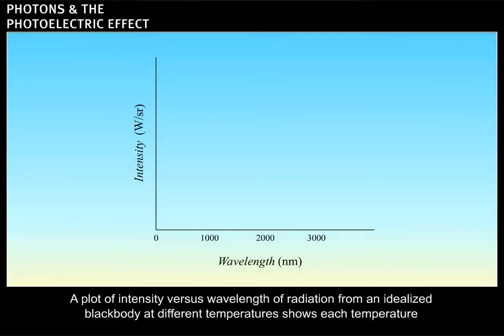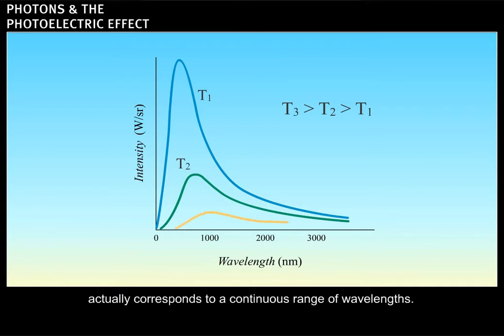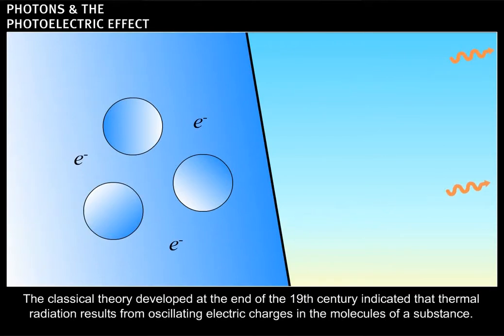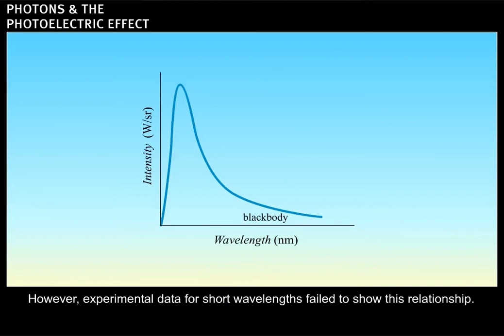A plot of intensity versus wavelength of radiation from an idealized black body at different temperatures shows each temperature actually corresponds to a continuous range of wavelengths. The classical theory developed at the end of the 19th century indicated that thermal radiation results from oscillating electric charges in the molecules of a substance. The theory implied that the intensity of the black body radiation should be inversely proportional to the fourth power of the wavelength. However, experimental data for short wavelengths failed to show this relationship.